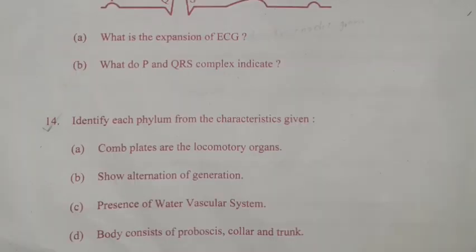Question 34: Identify each phylum from the characteristics given. A. Complets are the locomotory organs. Answer: Porifera. B. Show alternation of generation. Answer: Cnidaria or Coelenterata. C. Presence of water vascular system. Answer: Echinodermata. D. Body consists of proboscis, collar and trunk. Answer: Hemichordata.